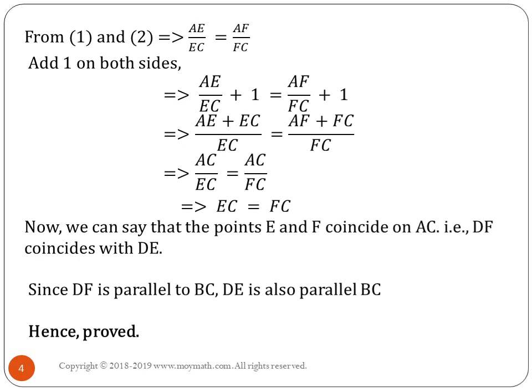Hence the converse of basic proportionality theorem is proved. In basic proportionality theorem, if there is a parallel line, they will be in proportion, meaning their sides will be in proportion. The converse theorem states that if their sides are in proportion, we have to prove that the lines are parallel.